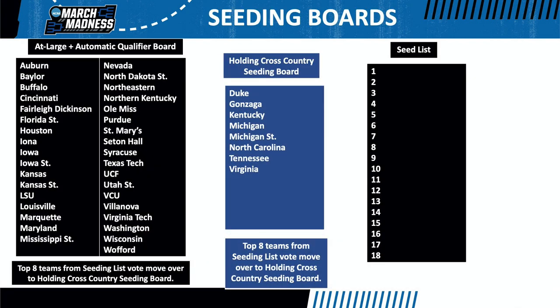Once all 12 votes have been submitted, the committee will see the results. The top eight vote-getters will go to a rank-eight cross-country vote to determine the initial number one seeds.